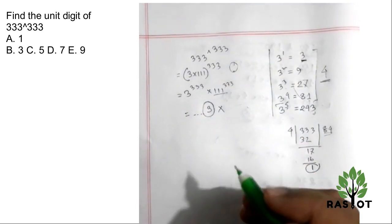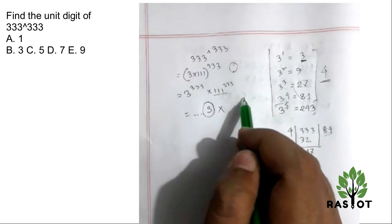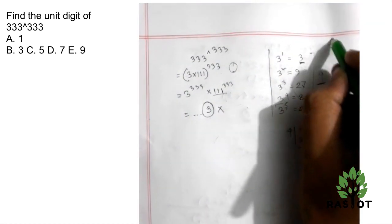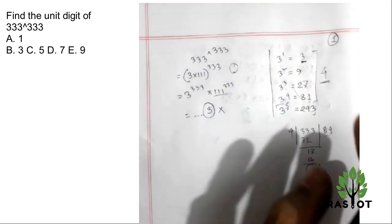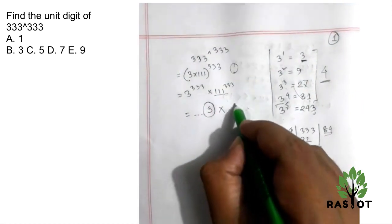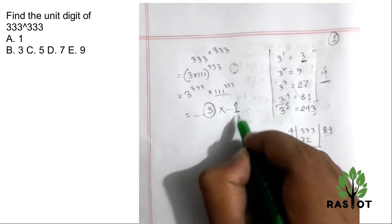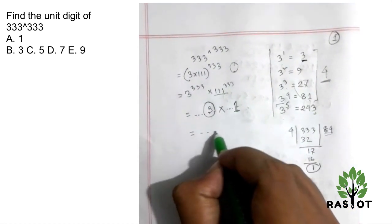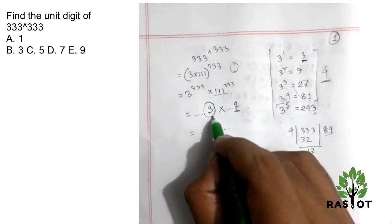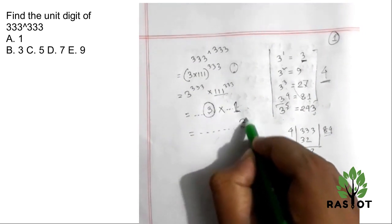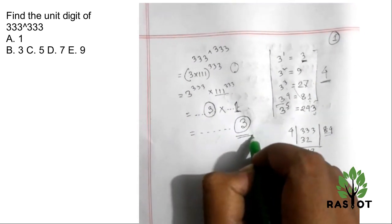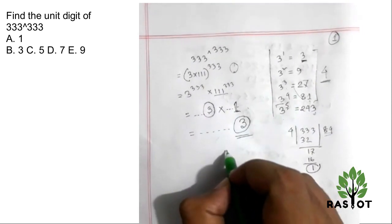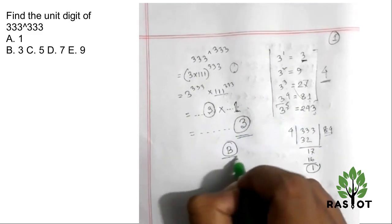111 to any power, the unit digit is always 1. So we multiply 3 times 1, which is 3. The unit digit is 3. That's why option B is the correct answer.